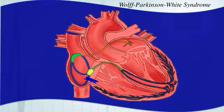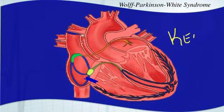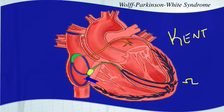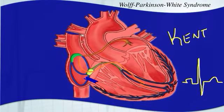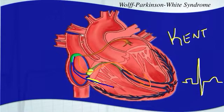The bypass track is called the Kent bundle or bundle of Kent. With normal depolarization, you get a P wave from atrial depolarization, a PR segment from the AV nodal pause, and then a QRS complex and T wave. But with this accessory pathway, depolarization can go directly from the atria into the ventricles. There's no pause at the AV node with this bypass track, so you get pre-excitation, and your P wave and QRS complex may be right next to each other.